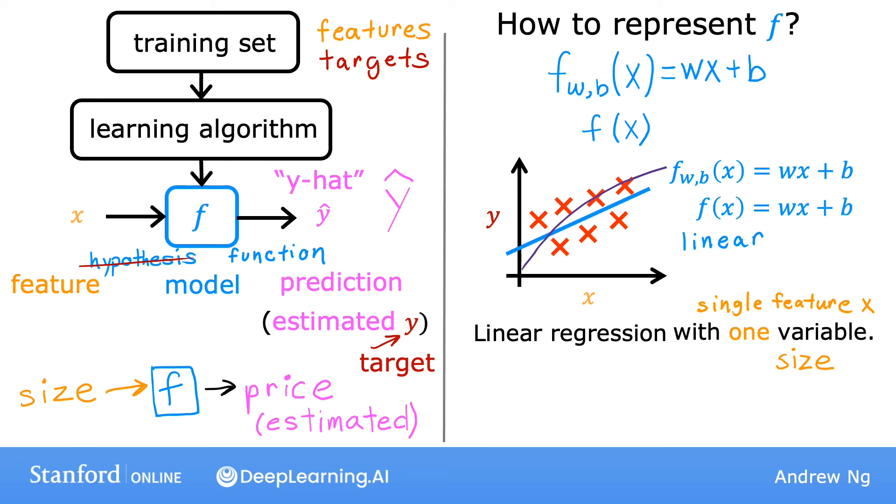Another name for a linear model with one input variable is univariate linear regression, where uni means one in Latin, and where variate means variable. So univariate is just a fancy way of saying one variable.